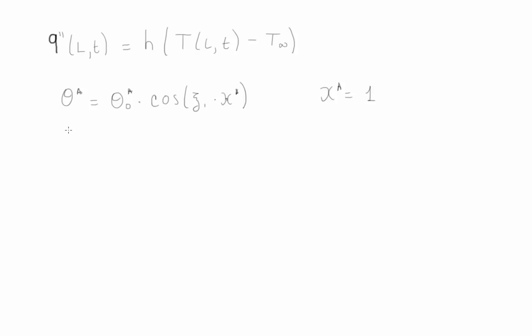Remember that theta star equals T at L minus T infinity divided by T initial minus T infinity. At this moment we know all these values and we can calculate theta star. We find that the value of T at L at the particular time equals 45.2 Celsius.